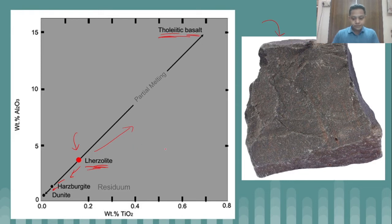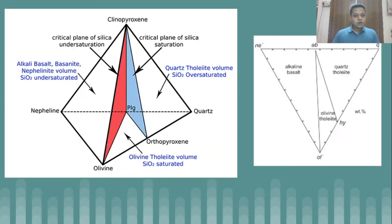This is how a basalt tetrahedron looks like. It is a tetrahedron because the four essential parts of the basalt are nepheline, olivine, quartz, and clinopyroxene. Very important dividing or distinguishing planes are dividing this tetrahedron in three important volumes.